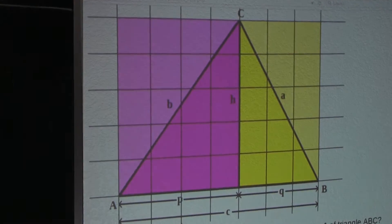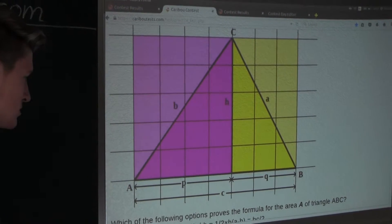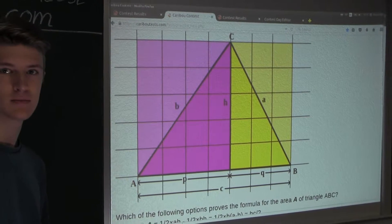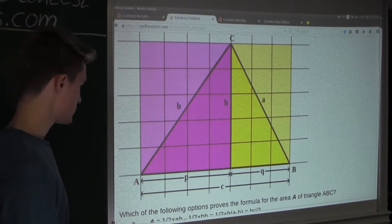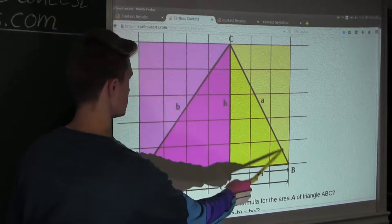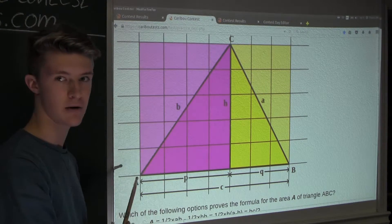So the question is, which of the following options proves the formula for the Area A of Triangle ABC? So here, this triangle ABC is the triangle which we want the area for.